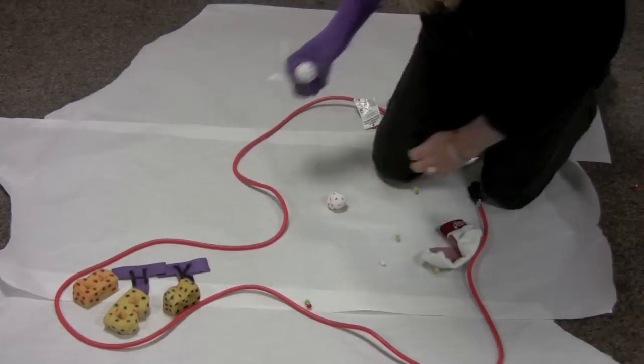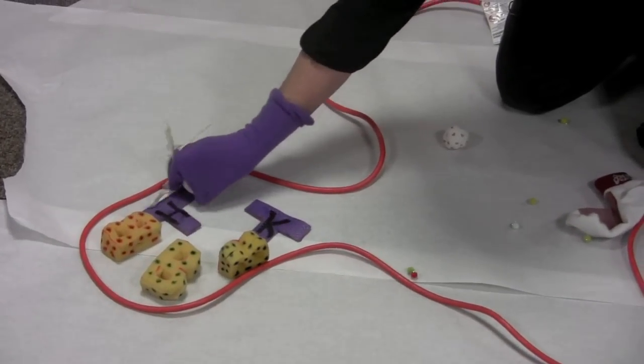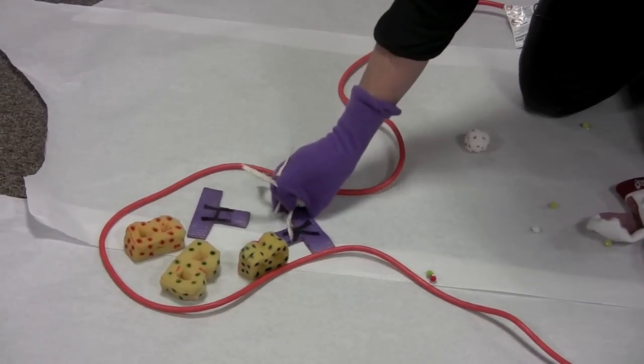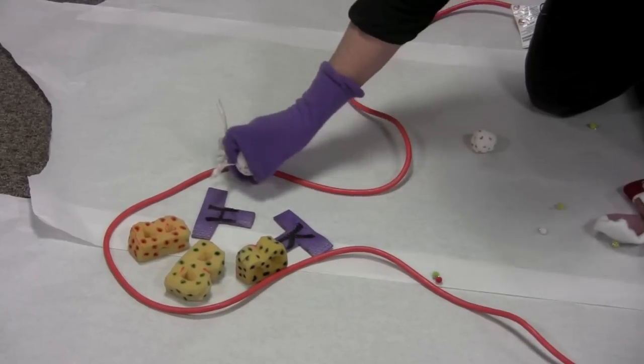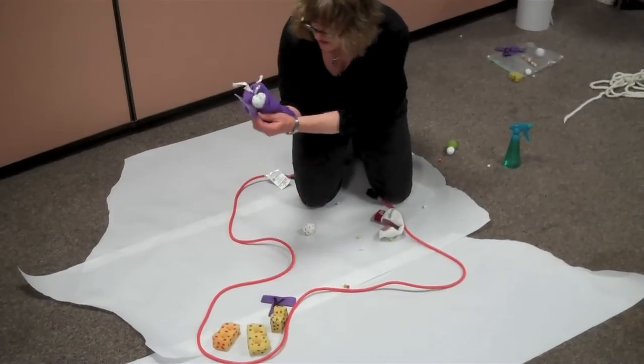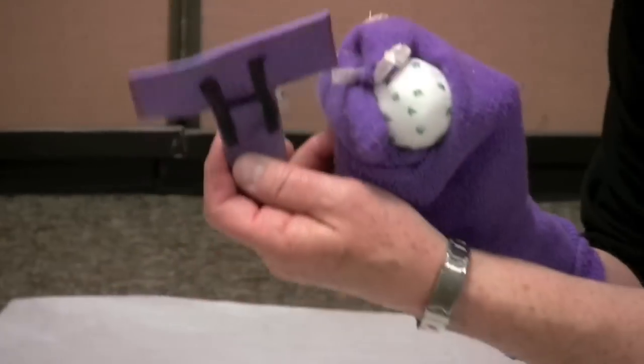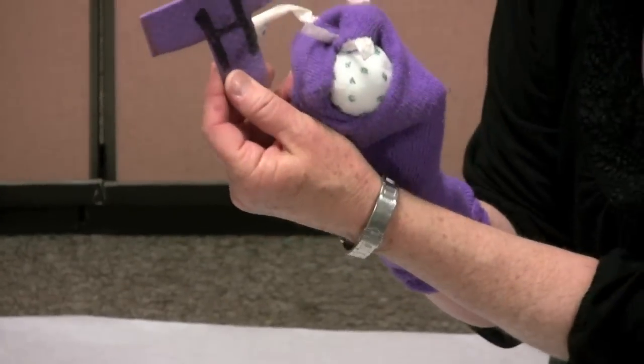So now the dendritic cell is in the lymph node and it's looking around for T cells and it finds a helper T cell. This is a killer T cell. It has a different function I'll talk about in a minute. Here's a helper T cell, T4. Very important. Dendritic cell goes, do you like this? Does this appeal to you? Now we have millions of different kinds of helper T cells.